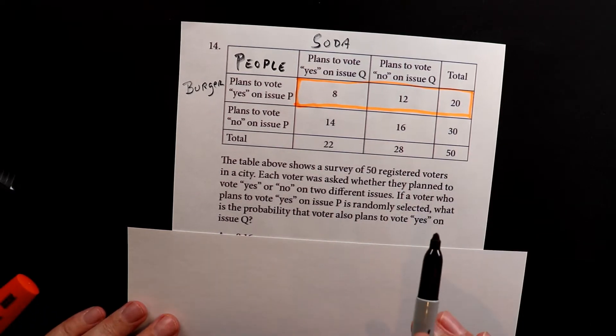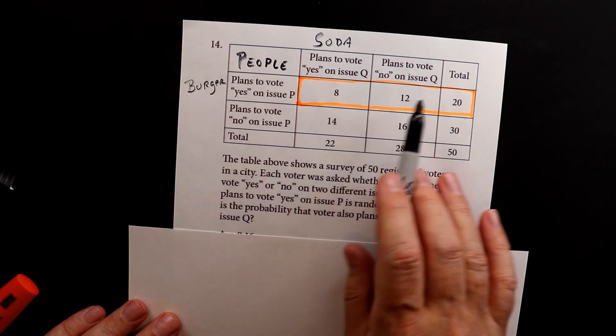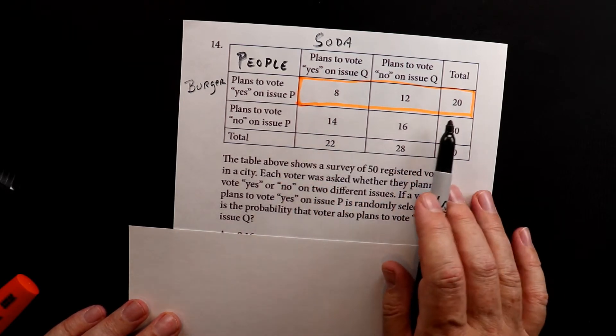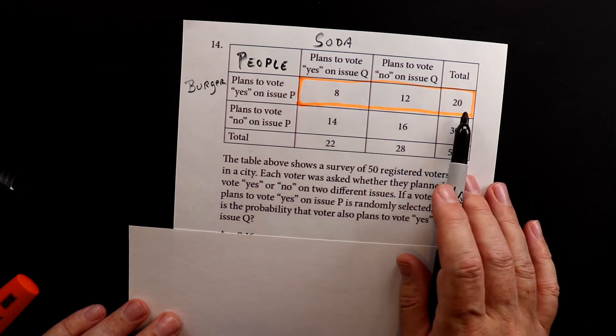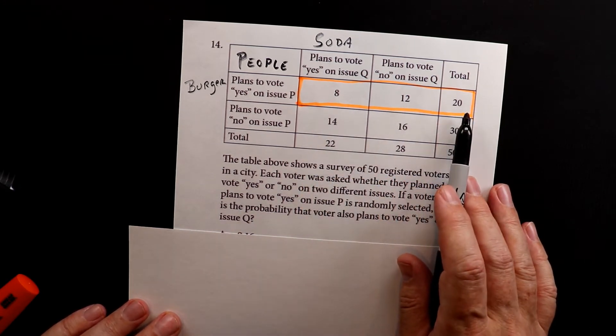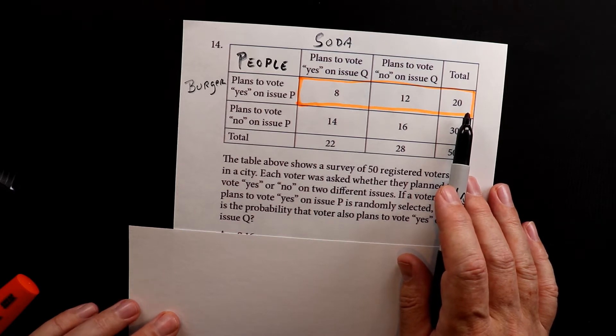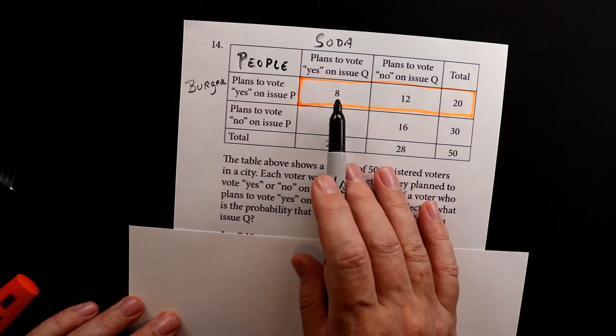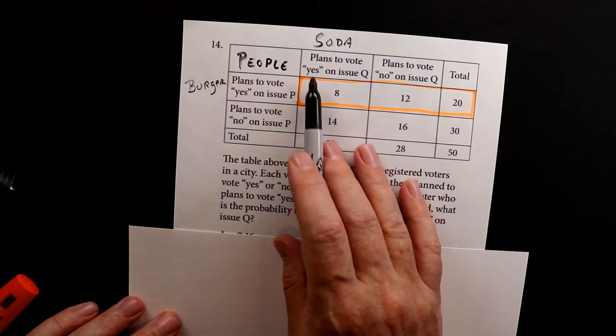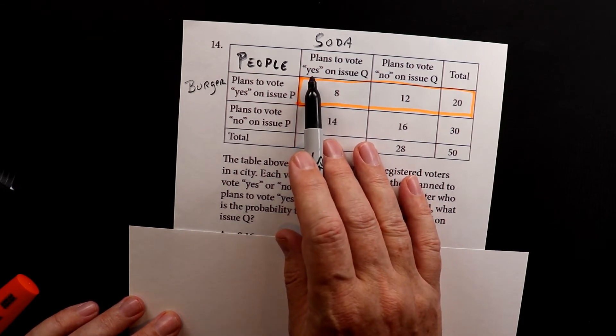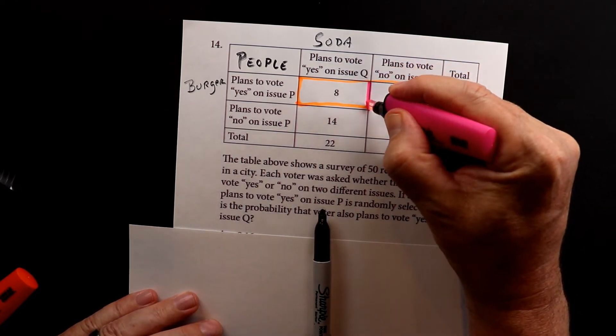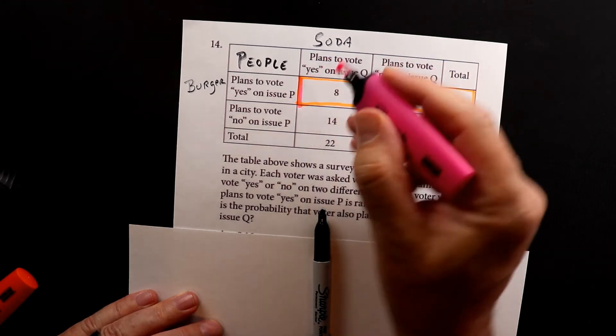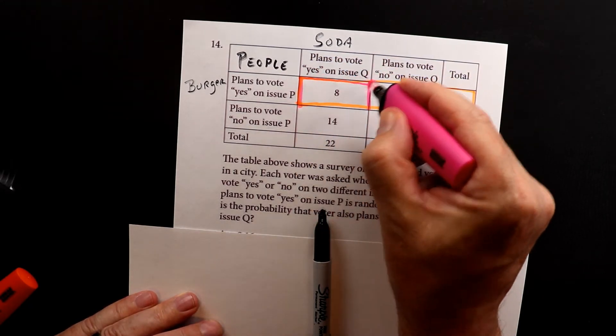Now the next thing is they're going to randomly select people from this group. So together we have yes people and no people. Together there are 20 people. So of those 20 people, if you close your eyes and pick from them, what is the chance that you would pick one of these people, one of the people that voted yes? That's what this is focusing on. What they're trying to do is find how often you will pick somebody in this top category.